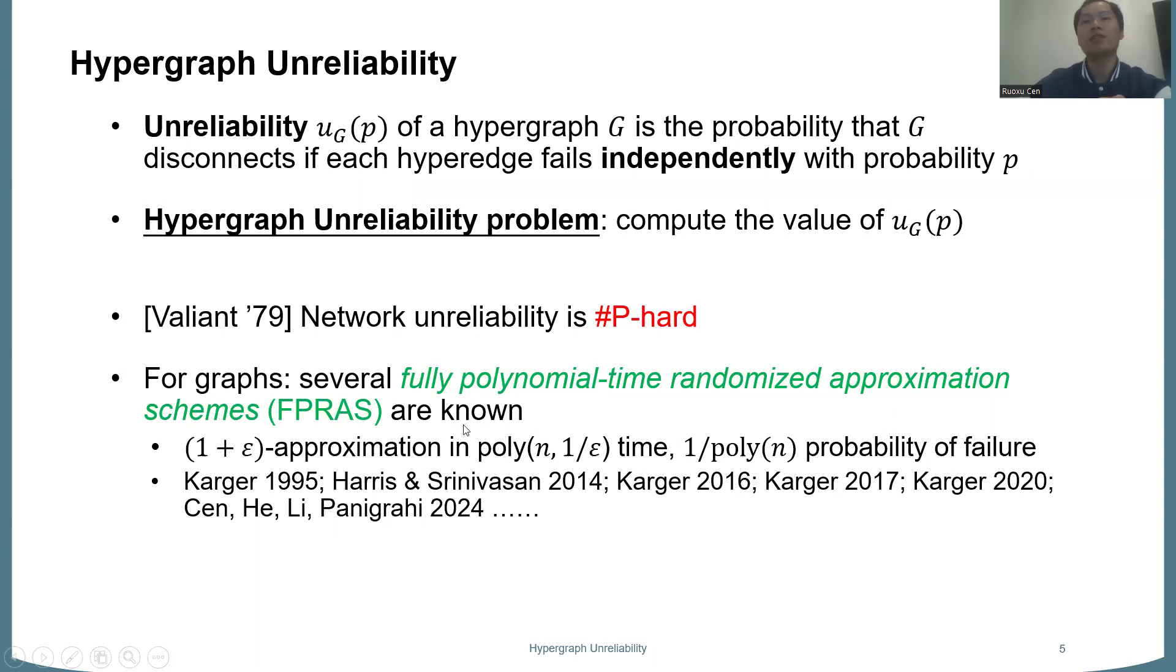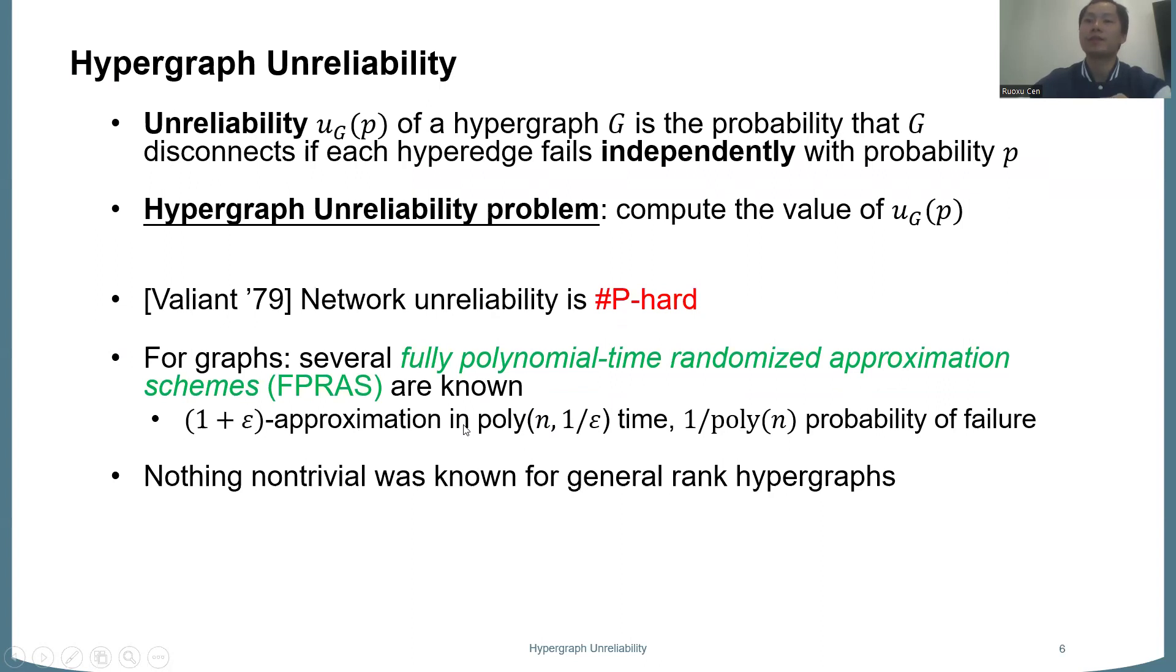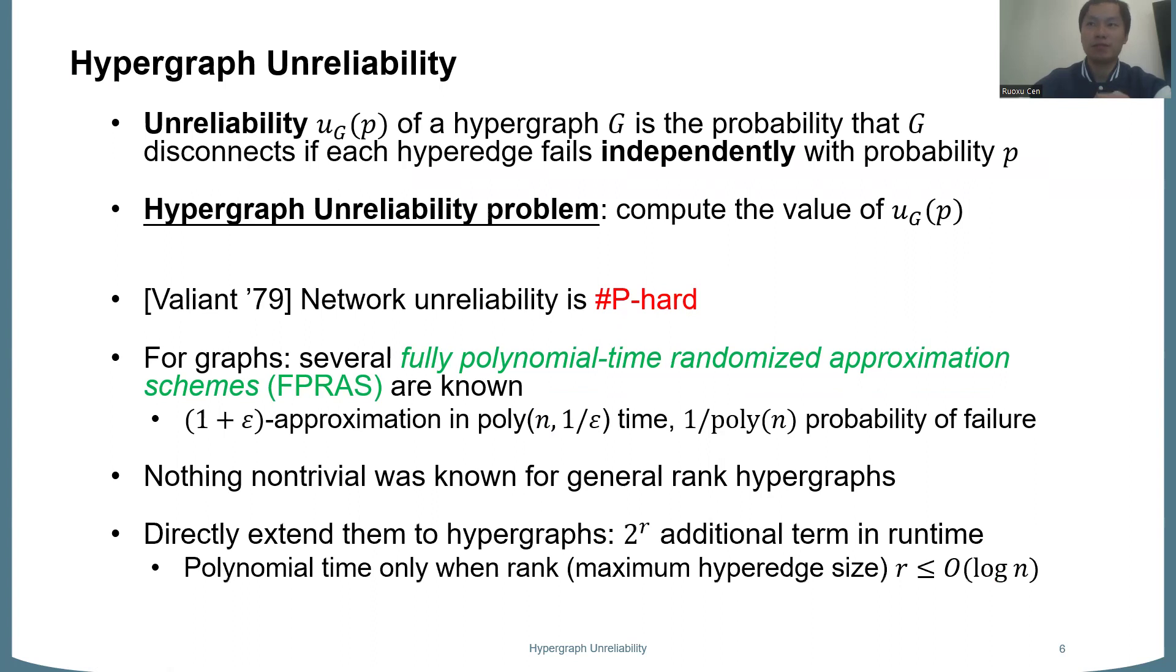So this is good, but surprisingly for hypergraphs, nothing non-trivial was known before. So this seemed to be a very interesting new problem. And we do remark that some of the previously listed algorithms on graphs can be directly extended to hypergraphs as well, but at a cost of 2^r additional runtime term. So here, r is the rank or maximum hyperedge size of the hypergraph. So this means we only have polynomial time algorithms, like PTAS, when the rank is at most log n. And for rank beyond that, we don't have anything, any non-trivial polynomial time algorithm.